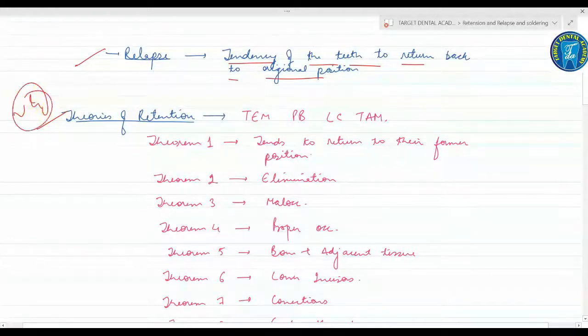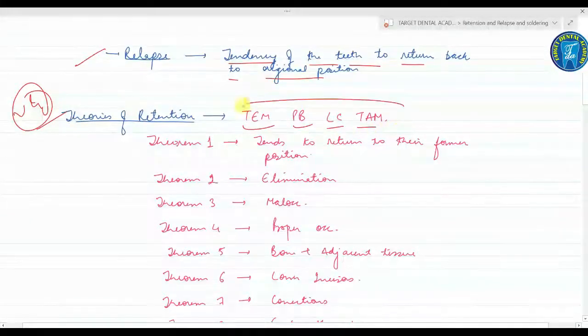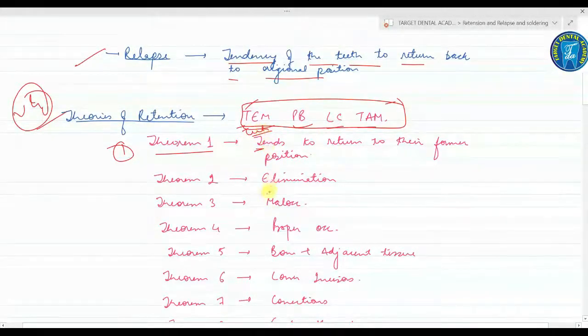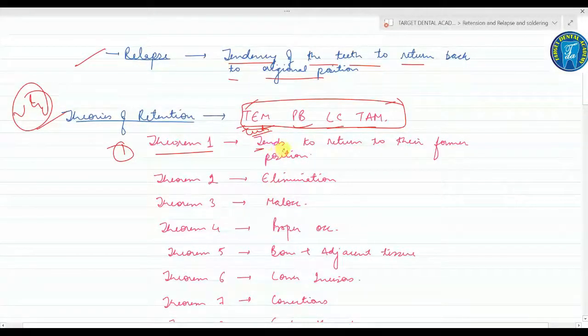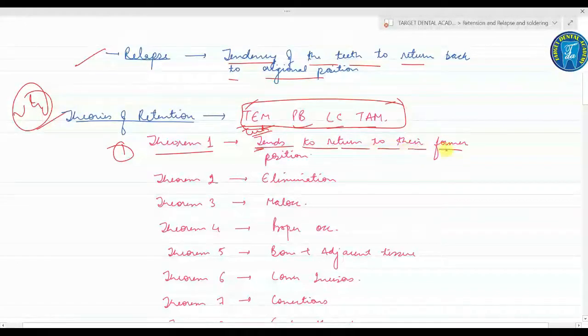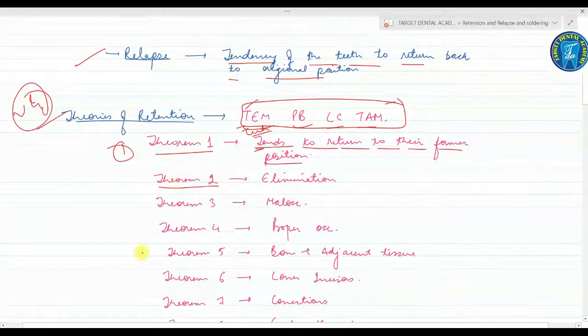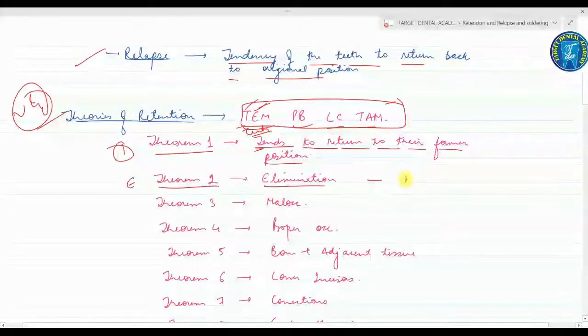Important are the theorems of retention - very important, commonly asked MCQ. This is just a mnemonic TAM PB LC TAM, according to theorem 1 to theorem number 10. Starting with the first theorem, T means teeth tend to return to their former or original position. Theorem two, E means elimination - the elimination of the cause of malocclusion will prevent the relapse.